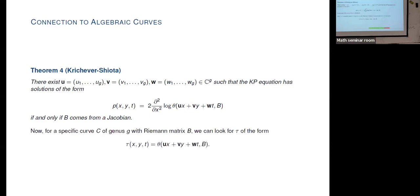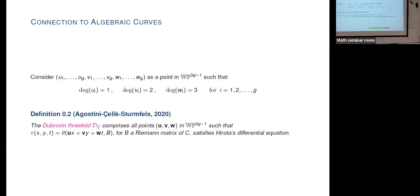Krichever and Shiota showed that we can use theta functions to get tau functions: if we put τ = θ(z; B) where z = ux + vy + wt, then this is a solution to the KP equation if and only if B is a Riemann matrix for a curve — i.e., comes from a Jacobian. This is the Schottky problem. For a specific curve of genus g with Riemann matrix B, we can look for tau functions that are theta functions, and the question is: what are the actual u, v, w that satisfy this? This inspired the definition of the Dubrovin threefold — given a curve C, it is the set of all points (u, v, w) in weighted projective space such that the theta function satisfies Hirota's differential equation. They showed this is an algebraic variety, gave equations for it, and the curve is embedded in it.